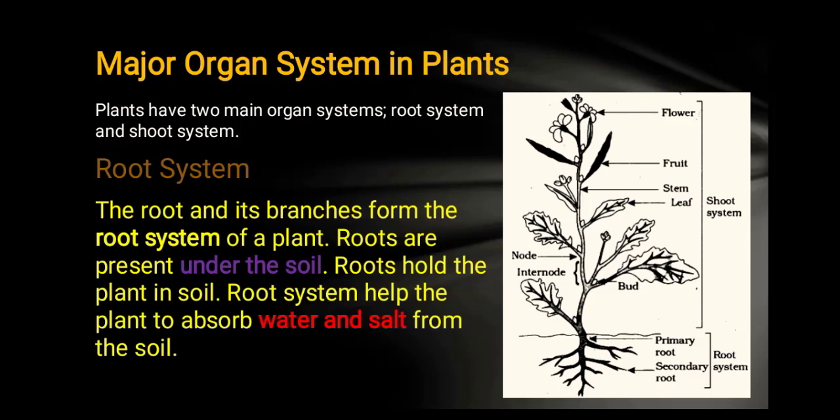The root system consists of a major root and branches. The branches spread through the soil, and wherever there is water or salt available, they absorb it into the plant's body.